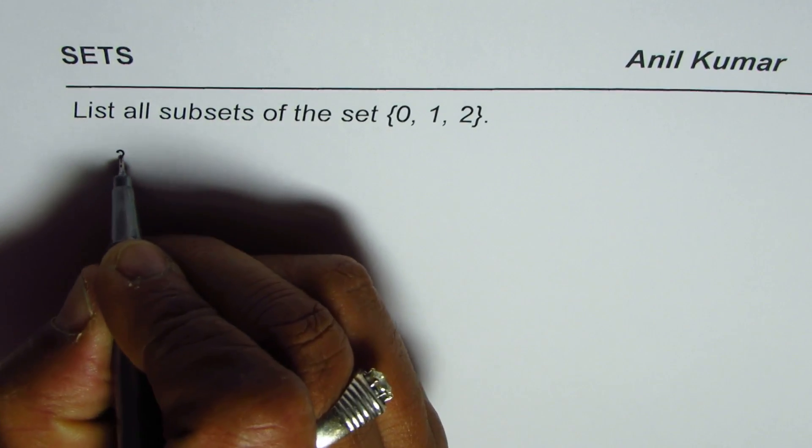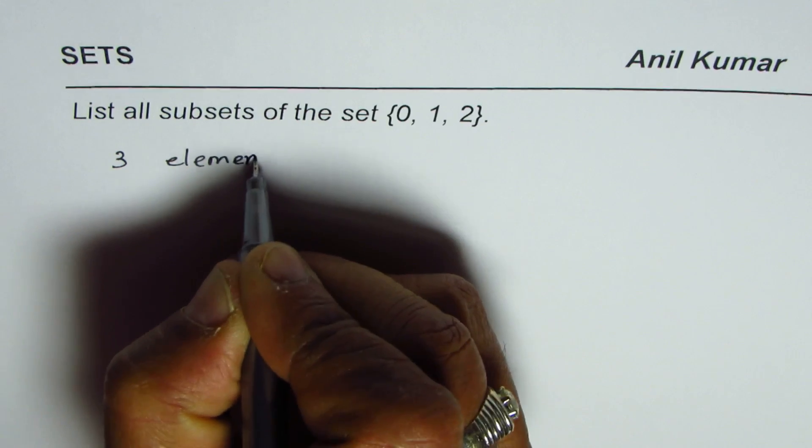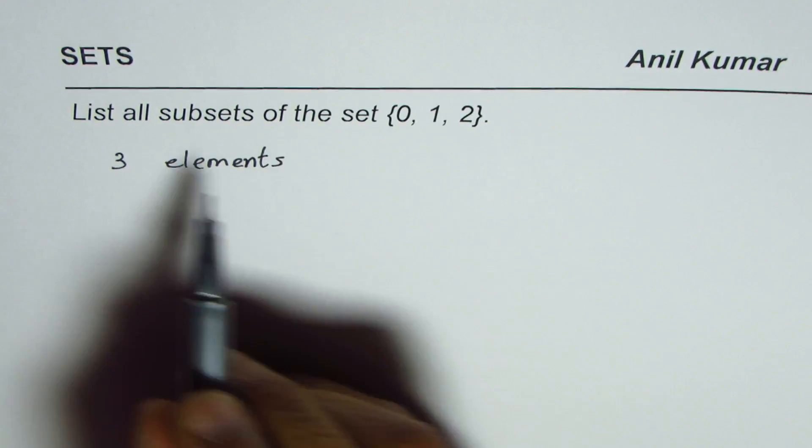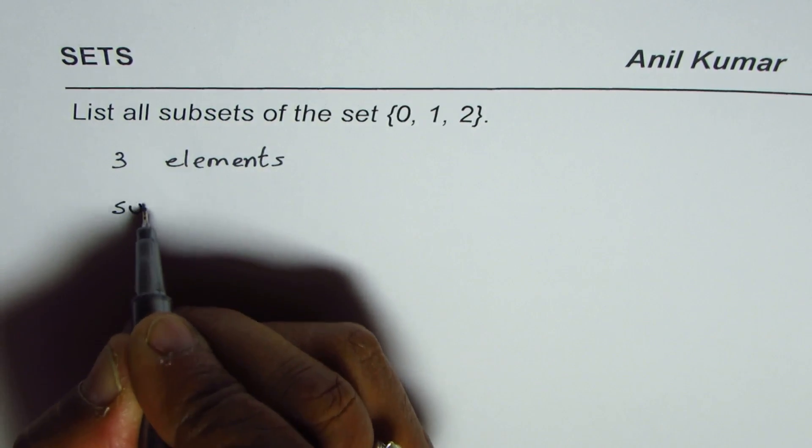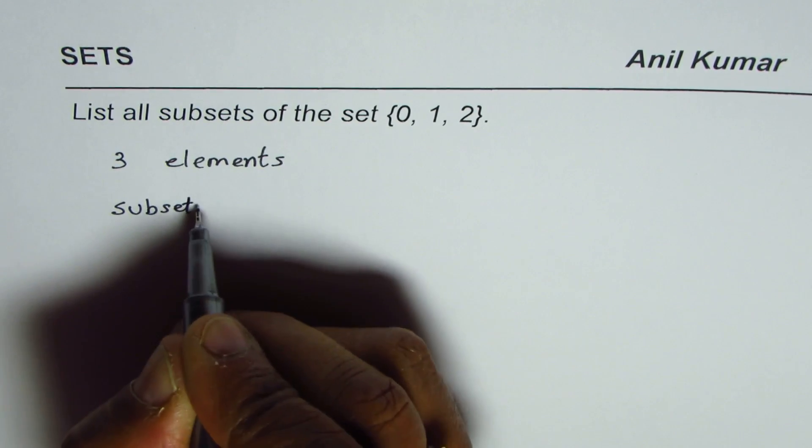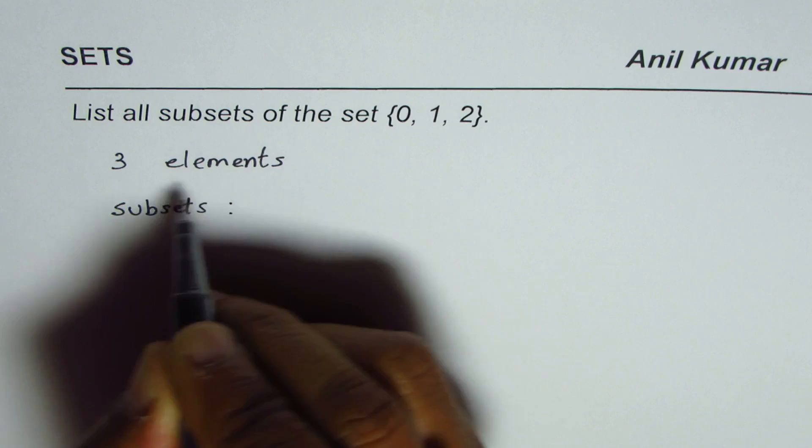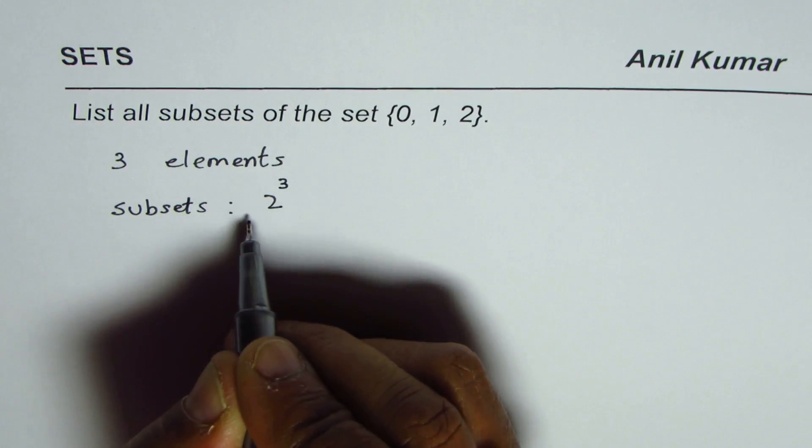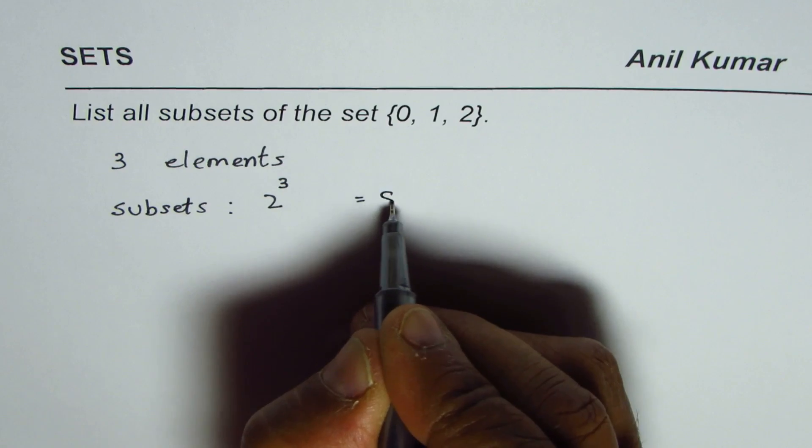We have three elements, so the total number of subsets will be 2 to the power of 3, which equals 8.